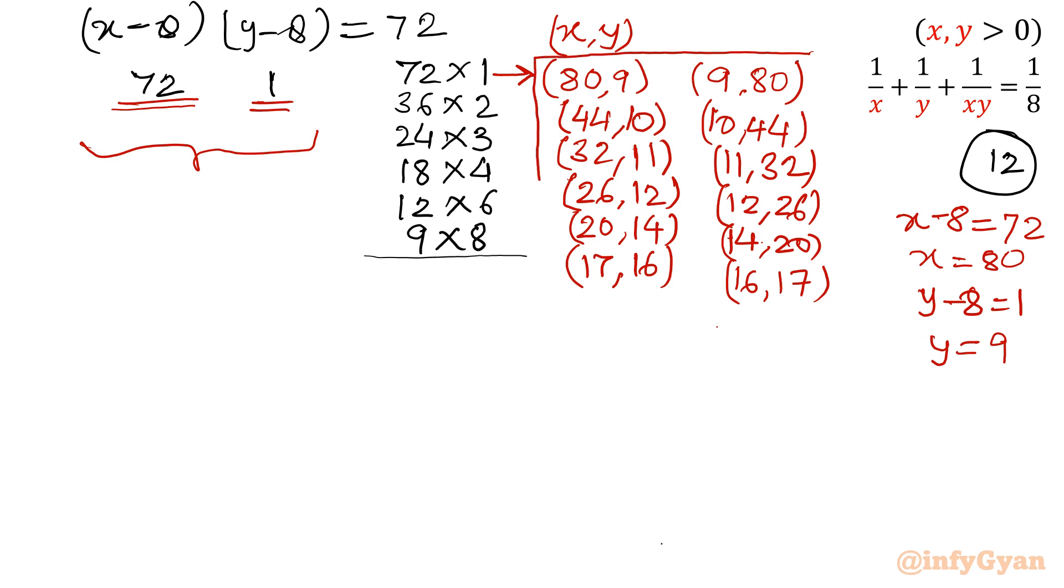If you will check, this is one set of solution. Now someone can say -72 comma -1 is also possible, it will give us 72. So okay, let us write that.